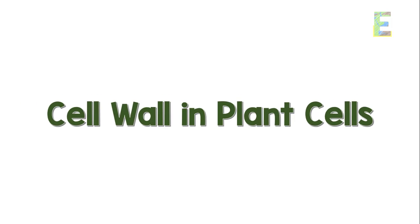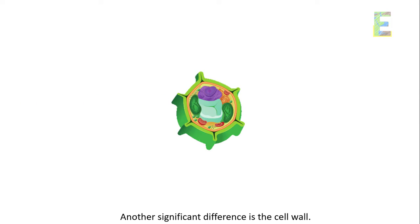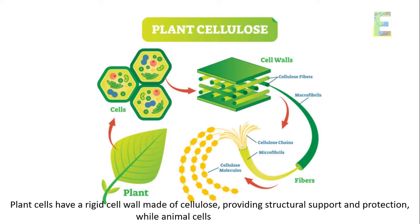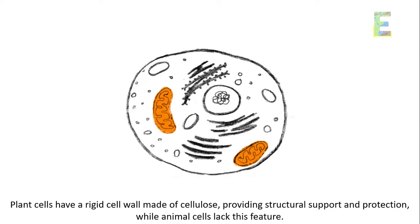Cell wall in plant cells. Another significant difference is the cell wall. Plant cells have a rigid cell wall made of cellulose, providing structural support and protection, while animal cells lack this feature.